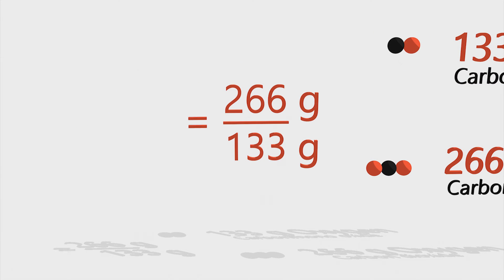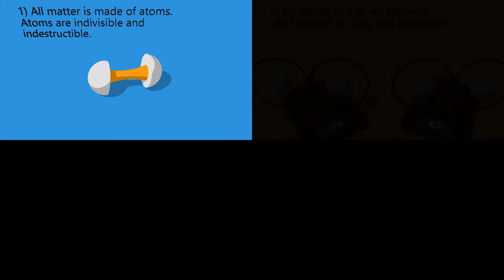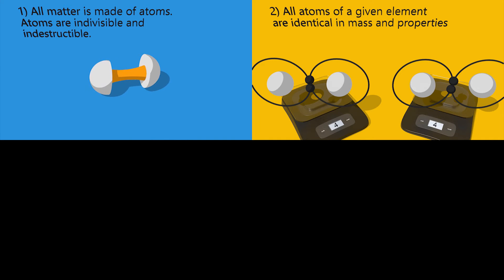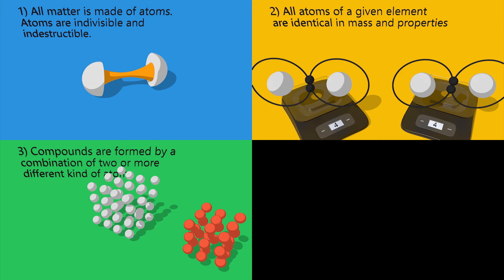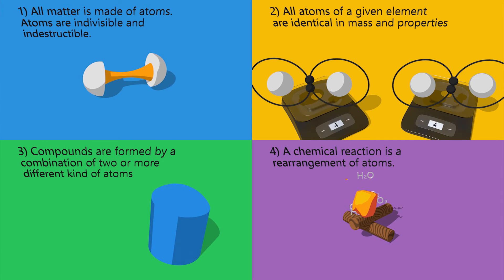From all these laws he developed and hypothesized the following atomic rules: one, all matter is made of atoms, atoms are indivisible and indestructible. Two, all atoms of a given element are identical in mass. Three, compounds are formed by a combination of two or more different kinds of atoms. Four, a chemical reaction is a rearrangement of atoms.